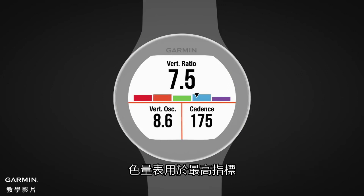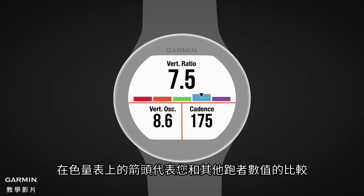The color gauge applies to the top metric. The position of the pointer on the gauge indicates how your value compares to other runners.